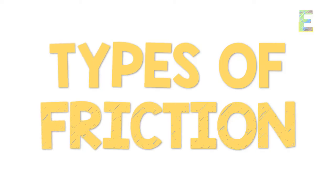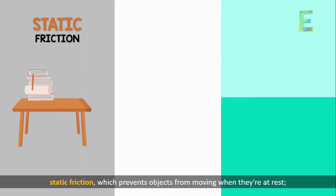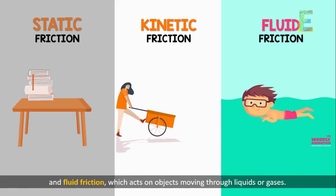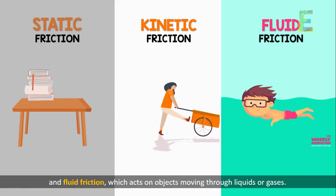Types of friction. There are different types of friction: static friction, which prevents objects from moving when they're at rest; kinetic friction, which opposes the motion of moving objects; and fluid friction, which acts on objects moving through liquids or gases.